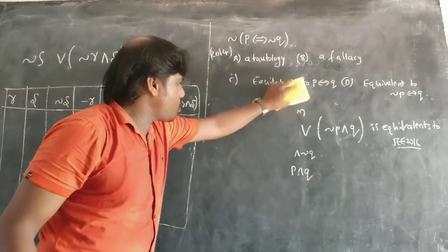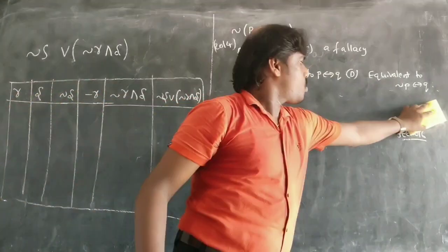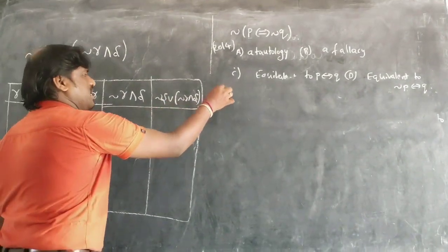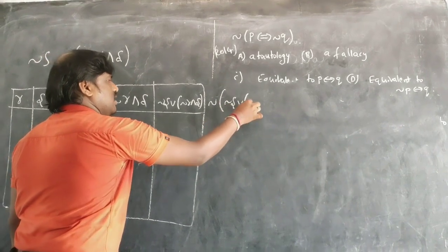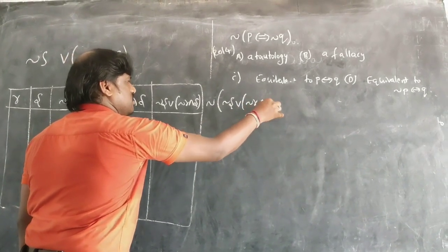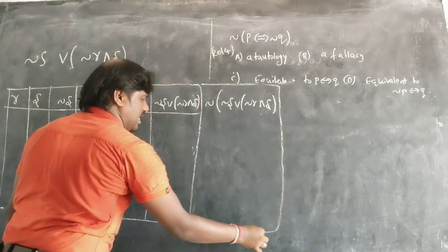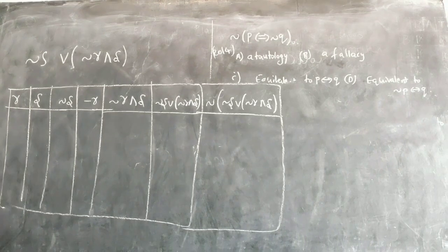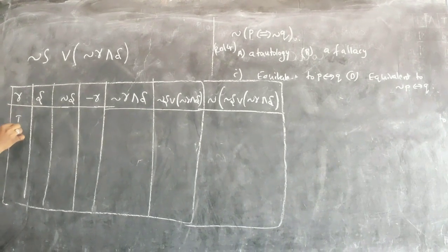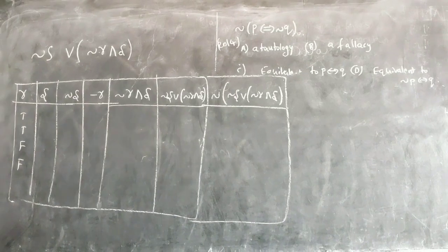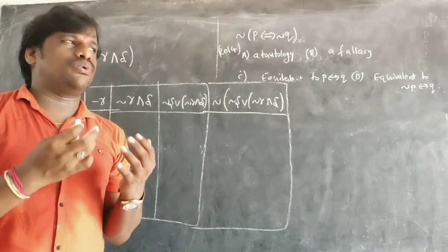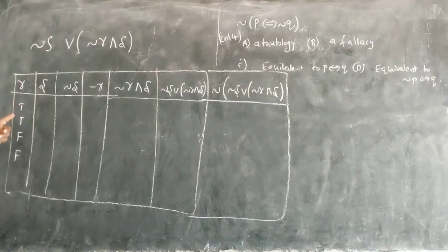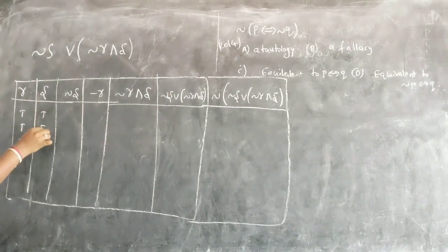Now, according to this, he asked the negation of this whole expression. So according to this, what we write here: R is one statement, S is two. T T F F. True true false false. If you have two statements, condition T T F F, T F T F, correct?